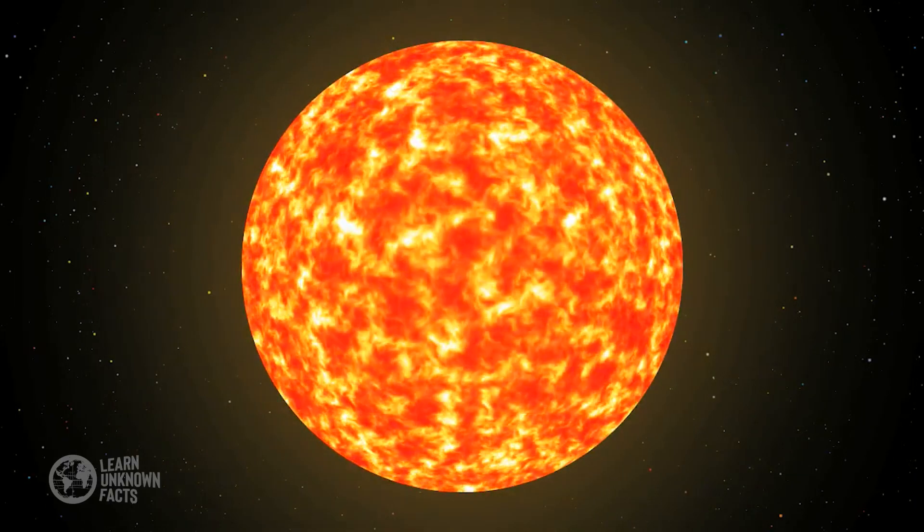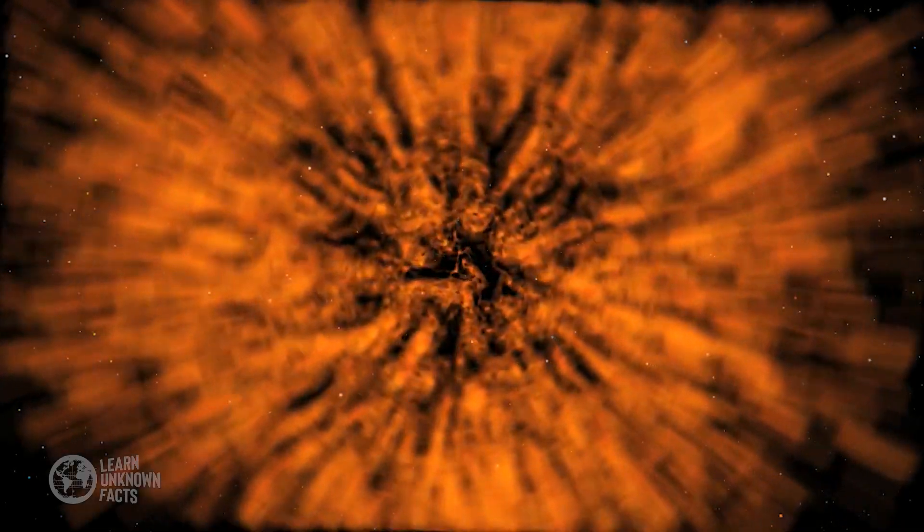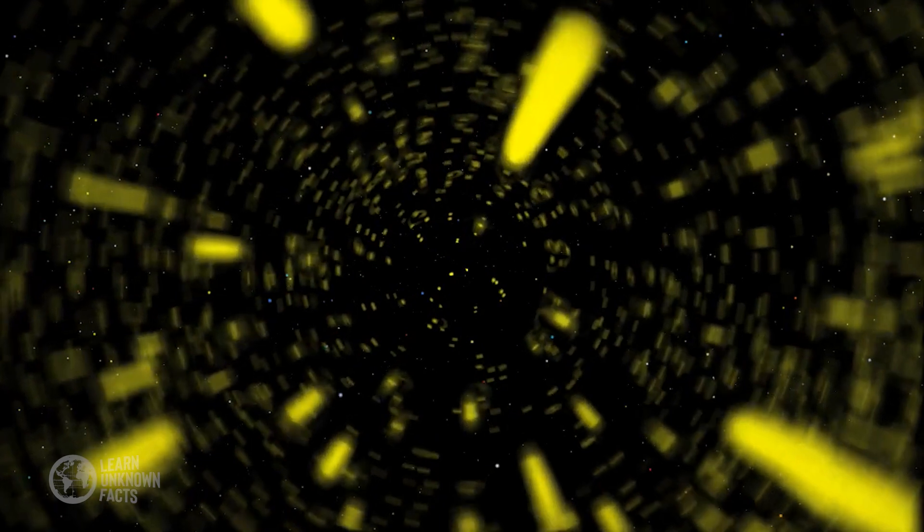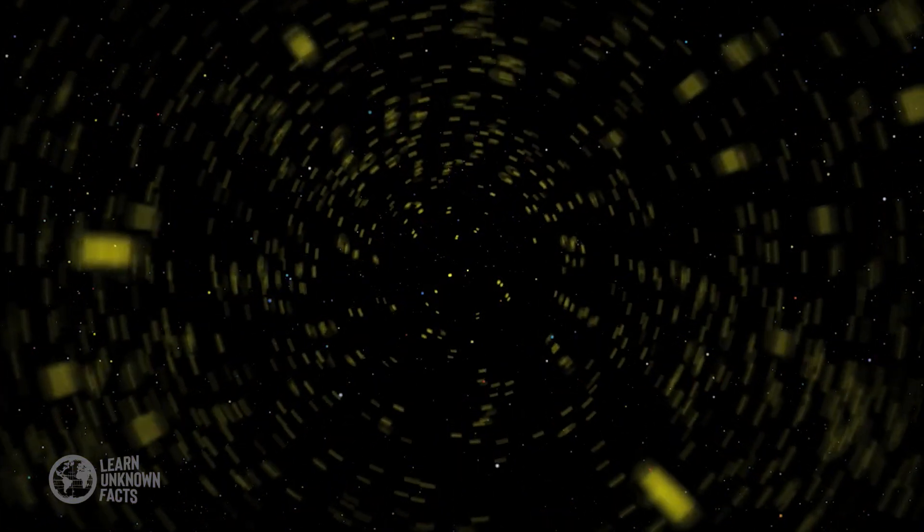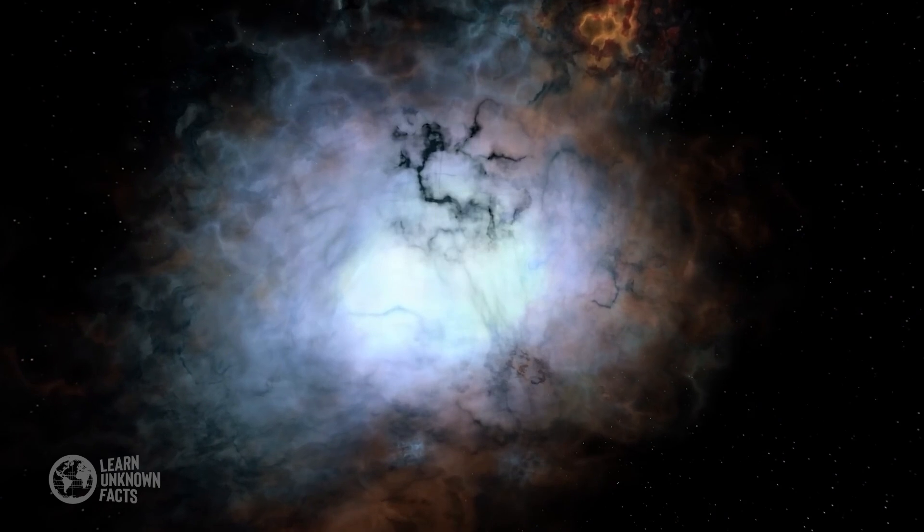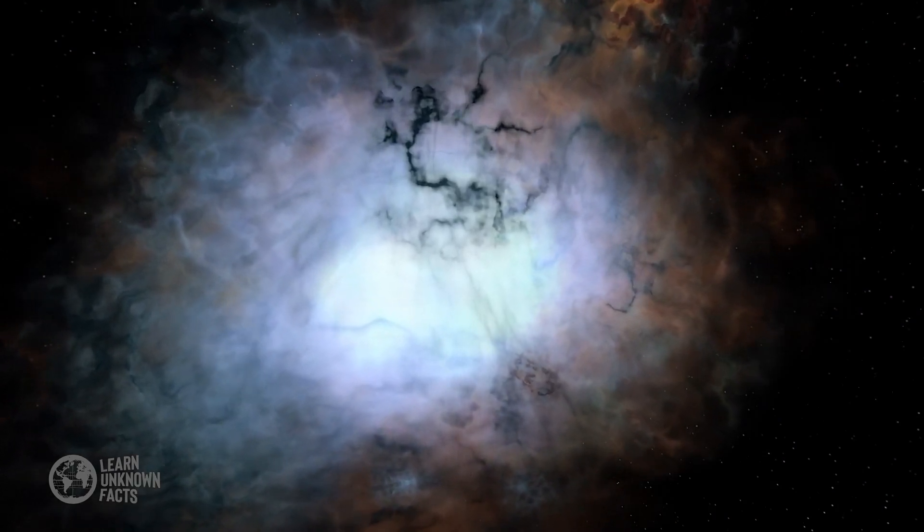Type 2 supernovas, on the other hand, result from the gravitational collapse of massive stars, typically those with at least eight times the mass of our Sun. When these stars exhaust their nuclear fuel, they can no longer support themselves against gravitational forces.